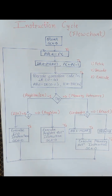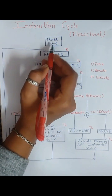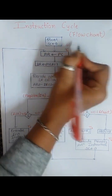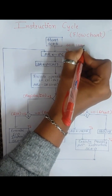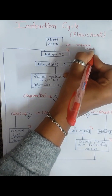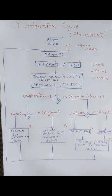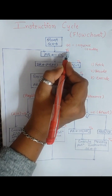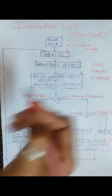Here is the detailed flowchart of the instruction cycle. So as you can see, first we are starting with the instruction and SC — SC is my sequence counter — which is used to maintain the sequence. So the sequence counter is initialized with the value 0. Then on the next step, that is the T0 timing cycle, as you can see over here, we have the timing cycle T0.